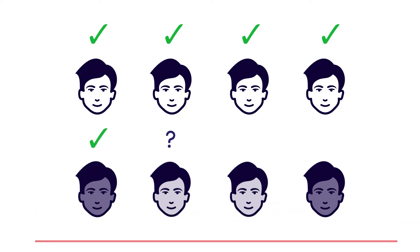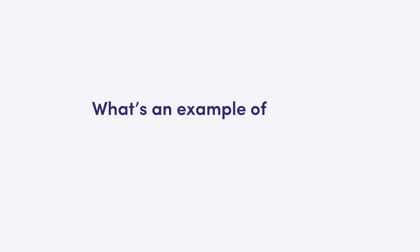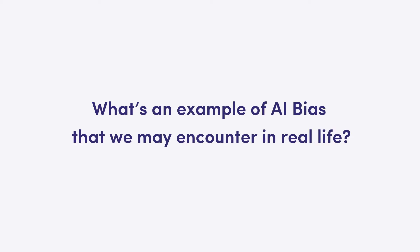The problem is that these biases are not intentional, and it's difficult to know about them until they've been programmed into the software. So what's an example of AI bias that we may encounter in real life?